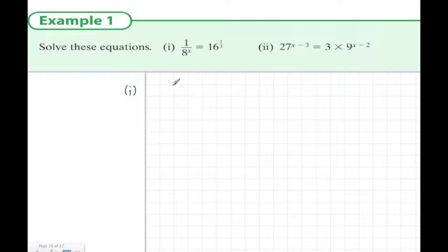In example 1, we should notice that the numbers 8 and 16 can both be written as powers of 2. So if we write out the powers of 2, like 2 to the power of 2 is 4, to the power of 3 is 8, and 2 to the power of 4 is 16.